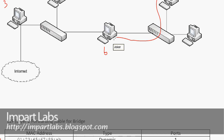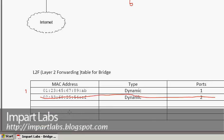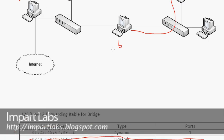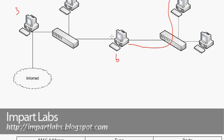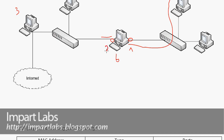When the bridge looks for the destination MAC address in its table, it comes down the list and doesn't find it. In this situation, the bridge broadcasts the packet out on its other ports — not from the port it received the packet on (port 1), but from the other ports, such as port 2.